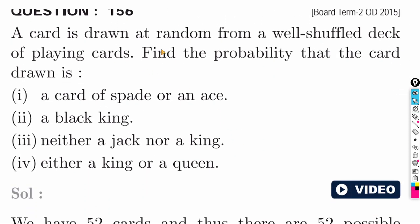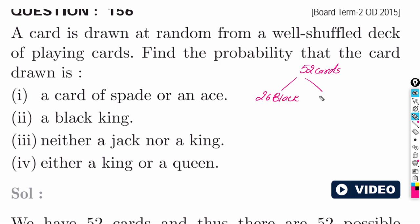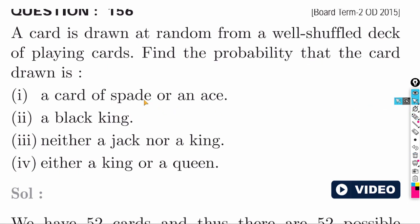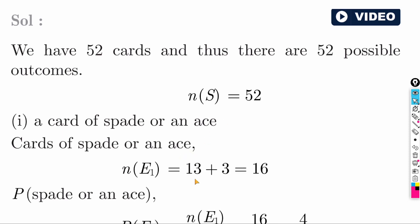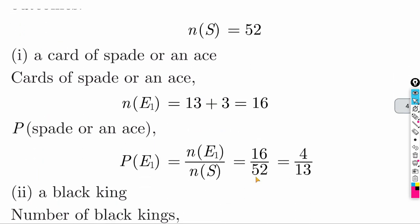A card is drawn at random from a well-shuffled deck of 52 playing cards. Total = 52 cards: 26 black (spades and clubs) and 26 red (hearts and diamonds). Find probability of a spade or an ace. Spade cards = 13. Ace cards total = 4, but one ace (spade) is already counted. So 13 + 3 = 16 favorable outcomes. Probability = 16 by 52.